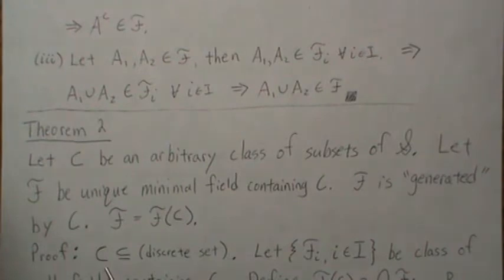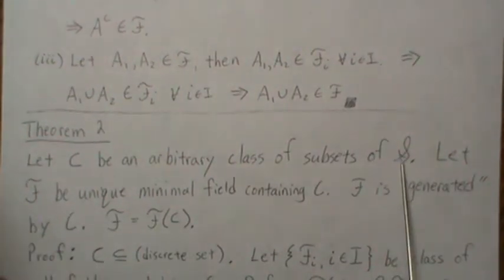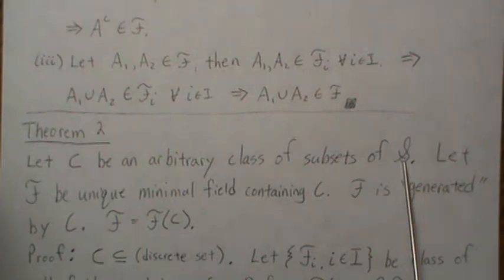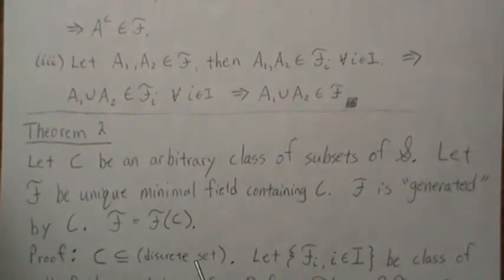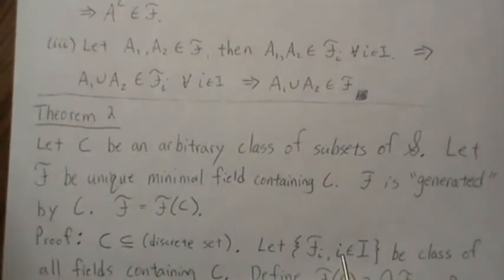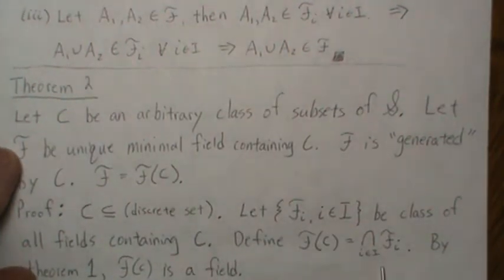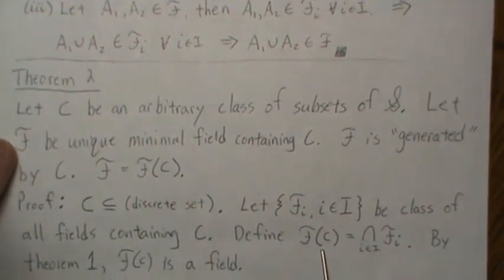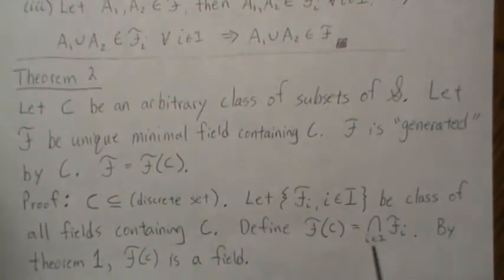Here's the proof. We know our arbitrary subset C is a subset of the discrete set — that is, all possible subsets of S. The discrete set is a field, so there exists at least one field containing C. Let FI be the class of all fields that contain C. We define FC as the intersection of all those fields. By theorem one, FC is a field. And since we're taking the intersection, it's the smallest one and it's unique.